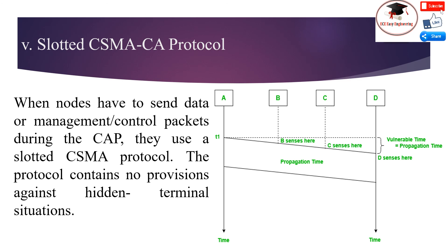Slotted CSMA/CA Protocol: When nodes have to send data or management packets during CAP, they use the slotted CSMA protocol. The protocol contains no provisions against the hidden terminal problem — for example, there is no RTS/CTS handshake. To reduce the probability of collision, the protocol uses random delays; it is thus a CSMA/CA protocol. The time slots making up the CAP are subdivided into smaller time slots called backoff periods. One backoff period has a length corresponding to 20 channel symbol times, and the slots considered by the slotted CSMA/CA protocol are just these backoff periods.